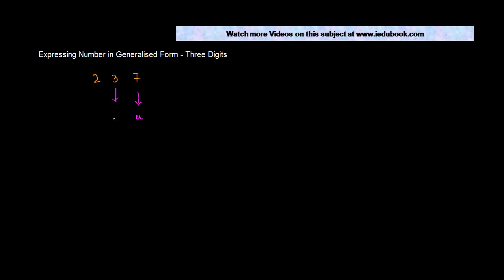3 is at the tens place, so I write it as t. And 2 is at the hundreds place, so I write this as H. Now whenever you have to write any three digit number in terms of the value, how can you write this? The value of a three digit number is basically equal to 100 into H.